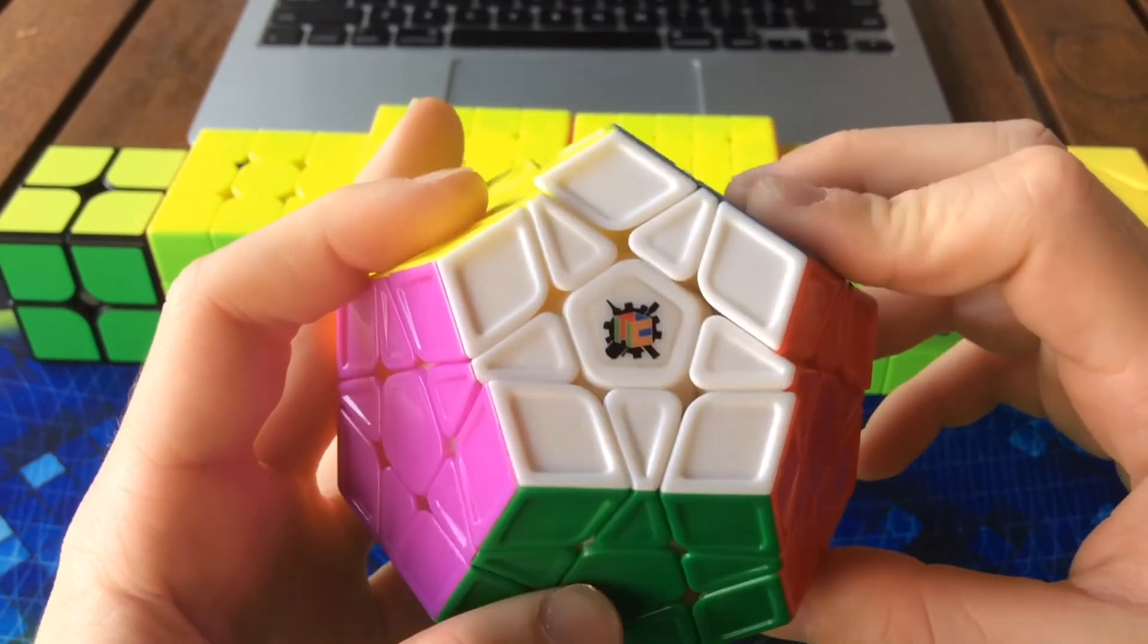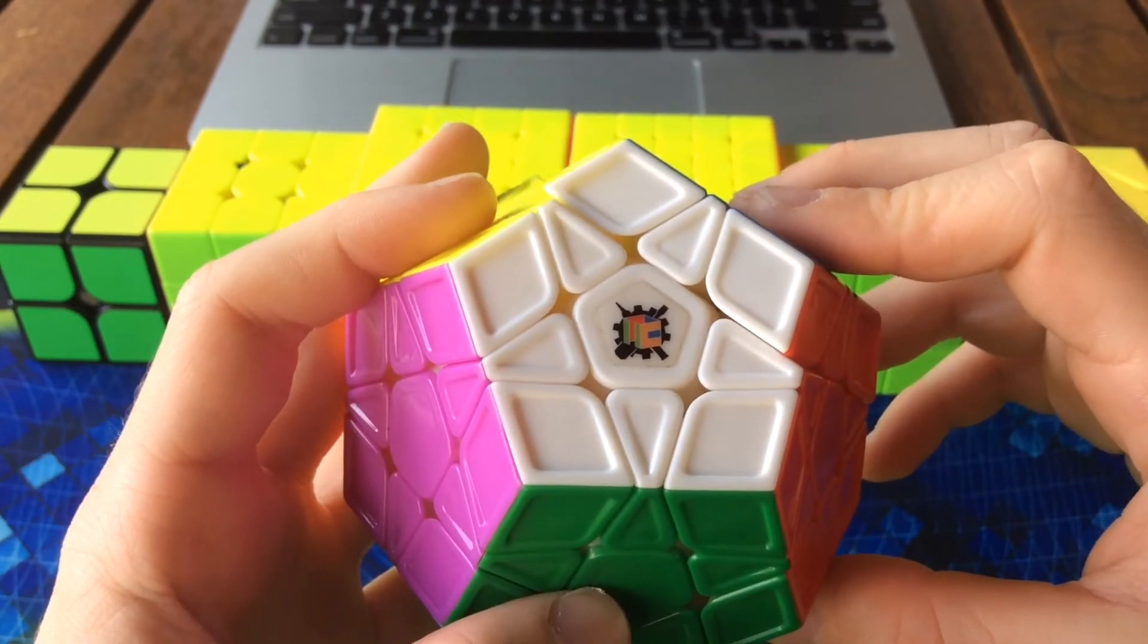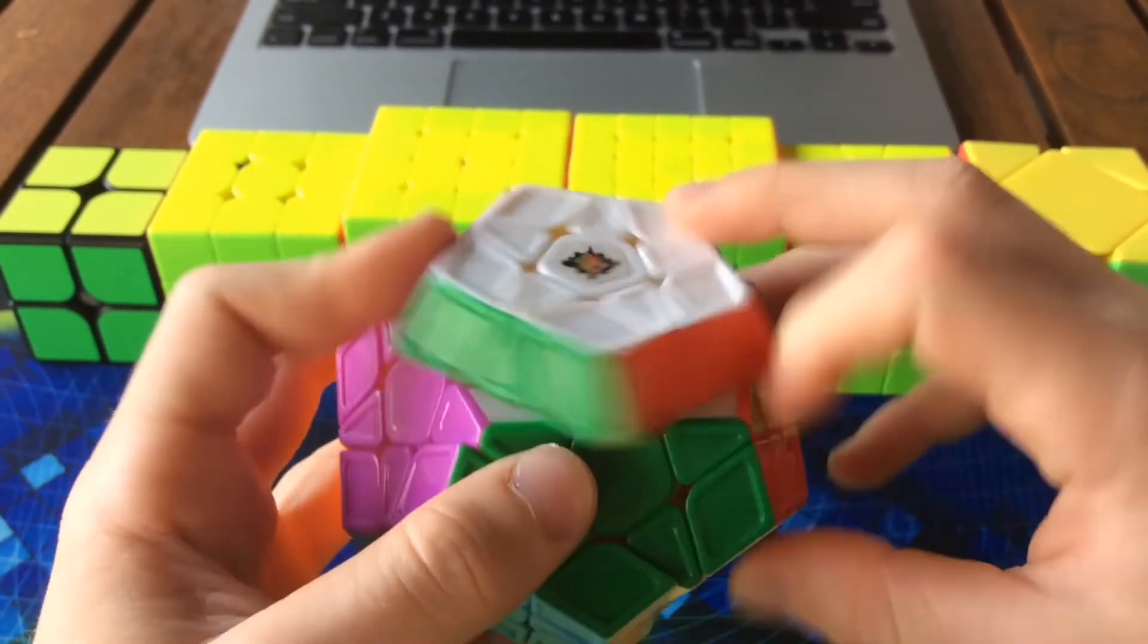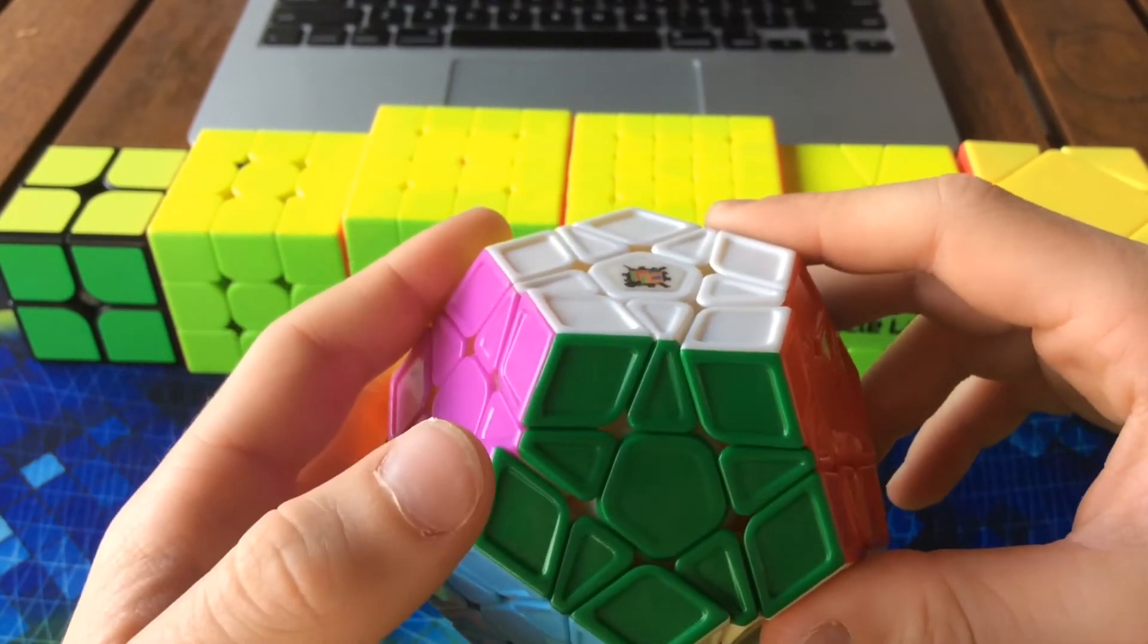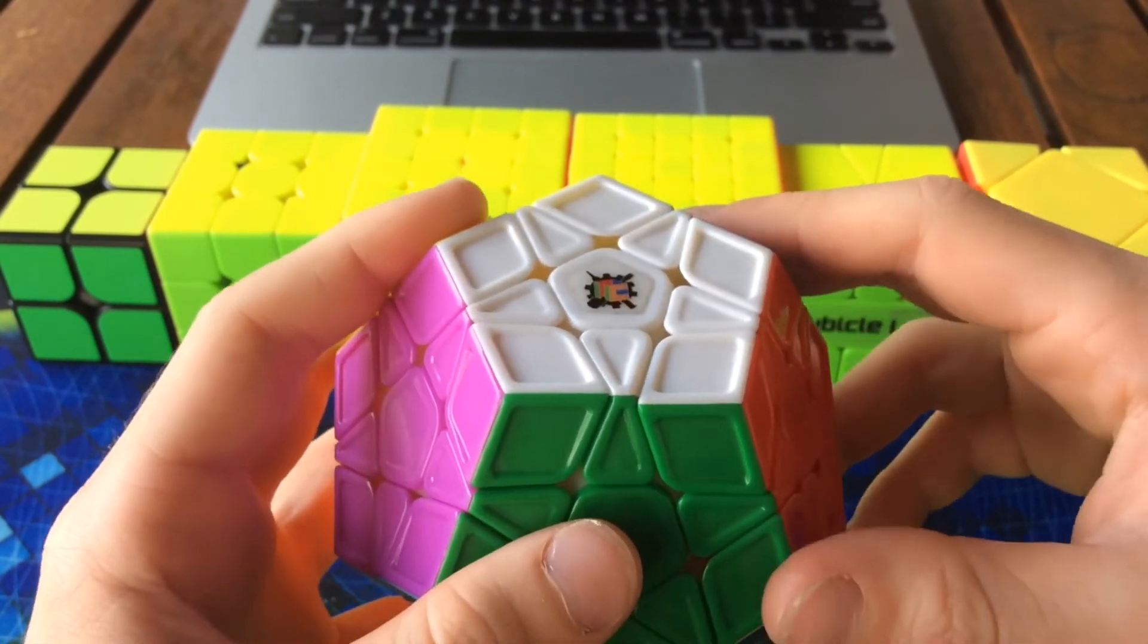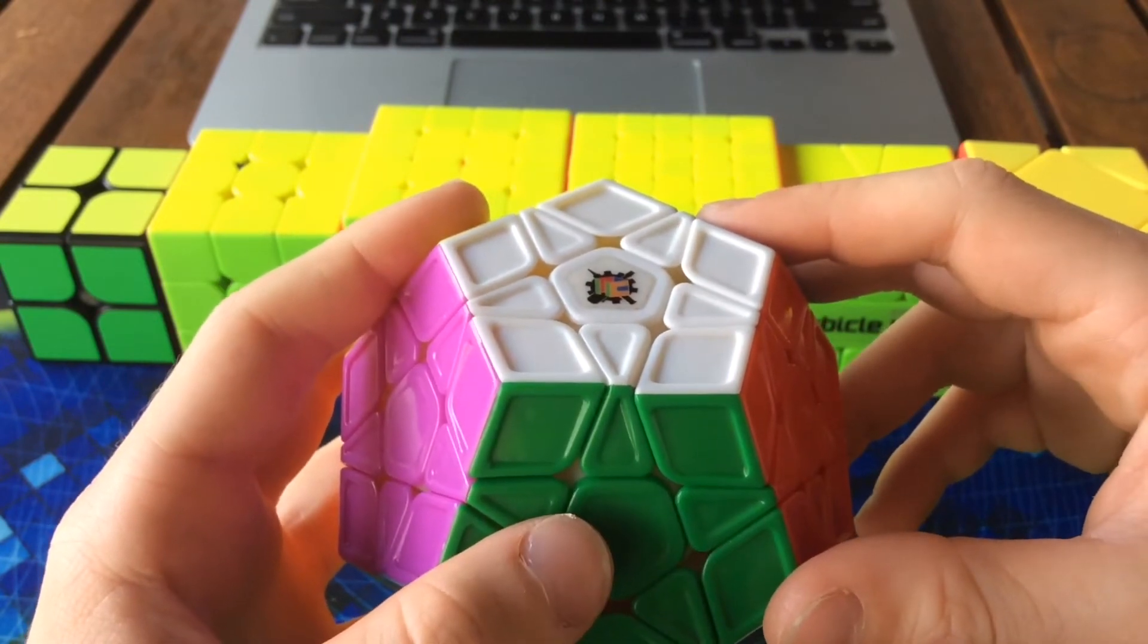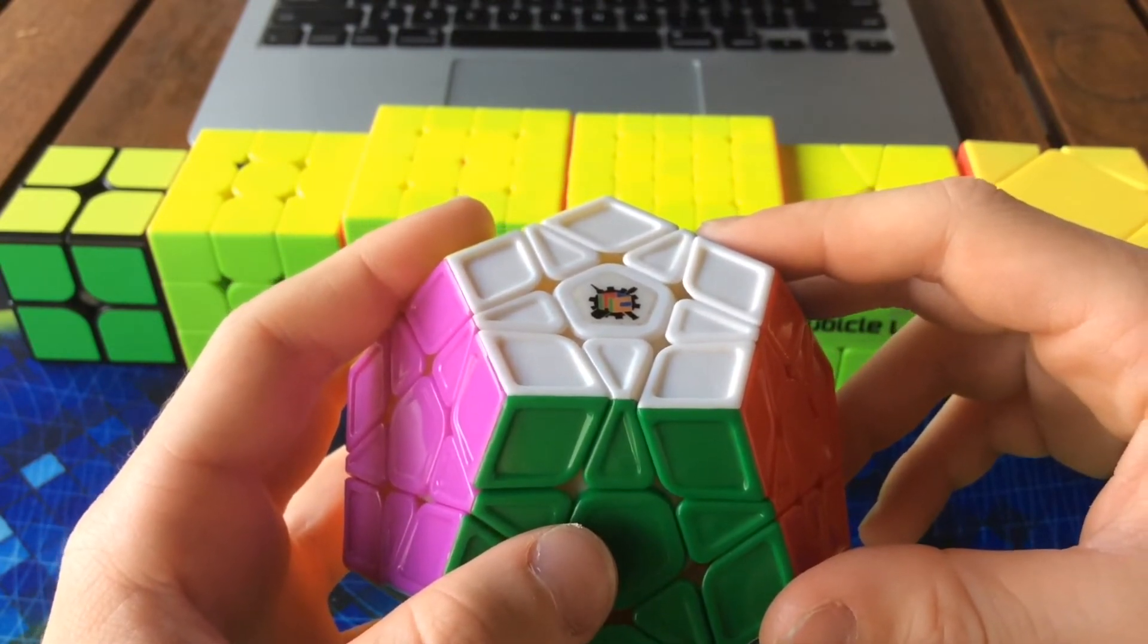For megaminx, I'm using the Cubicle Galaxy v2 M. This is really good. My goal for megaminx is to just get sub cutoff, which is two minutes 30, and for single, just get a sub two minutes 20 single.